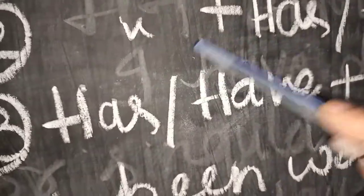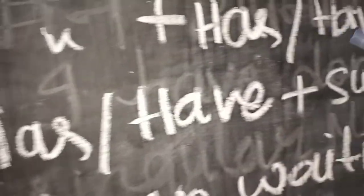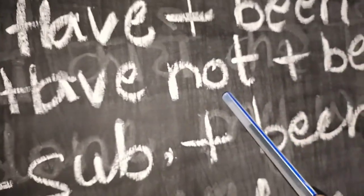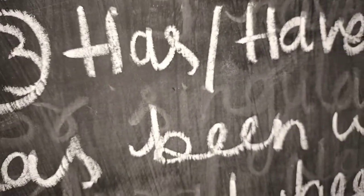Then the second is negative. It is the same form, only after has or have you have to add not. Then the third kind of sentence is interrogative sentence, in which you have to write the helping verb first.